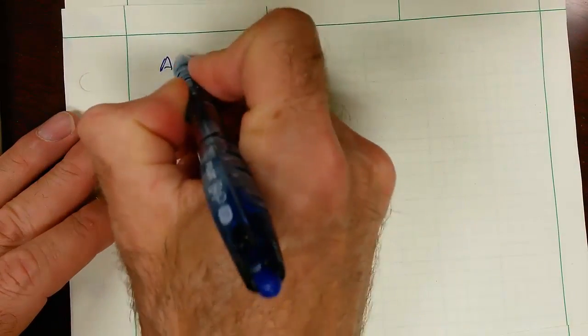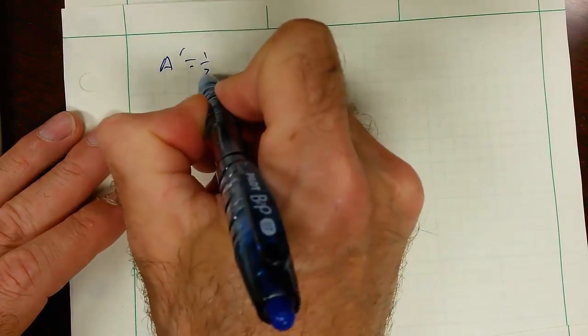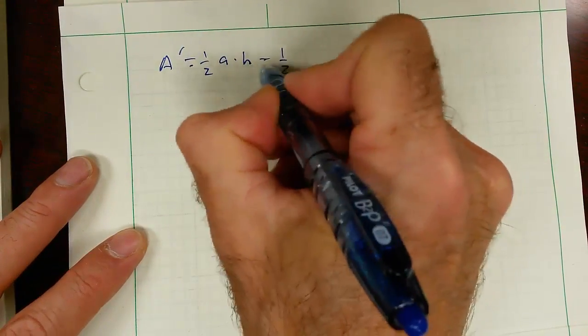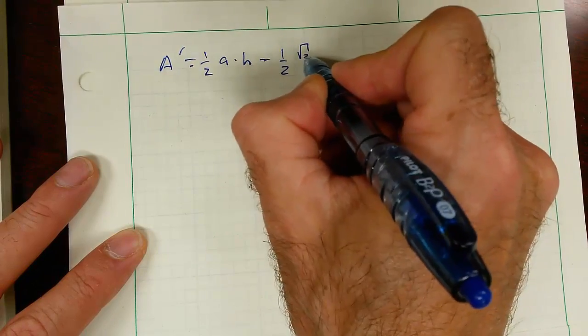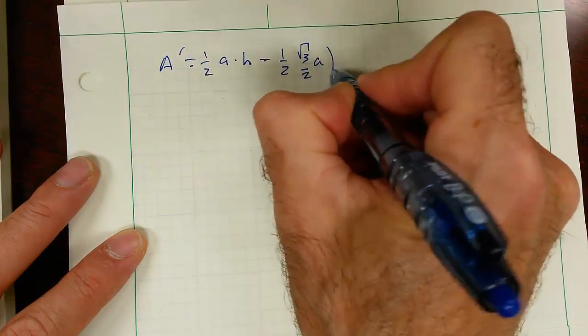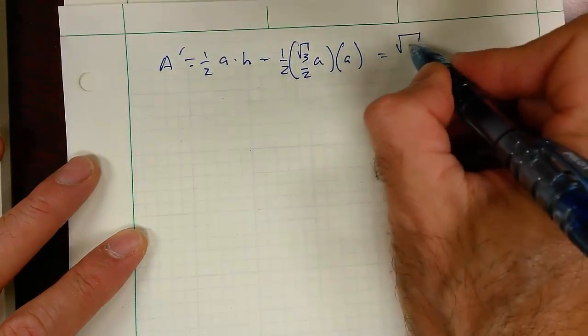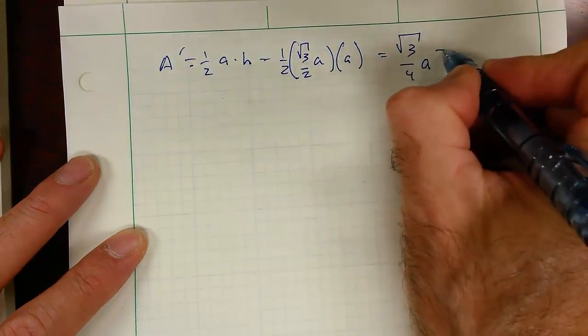So A prime is one-half base times height, so one-half square root of 3 halves a times a, or the square root of 3 over 4 a squared.